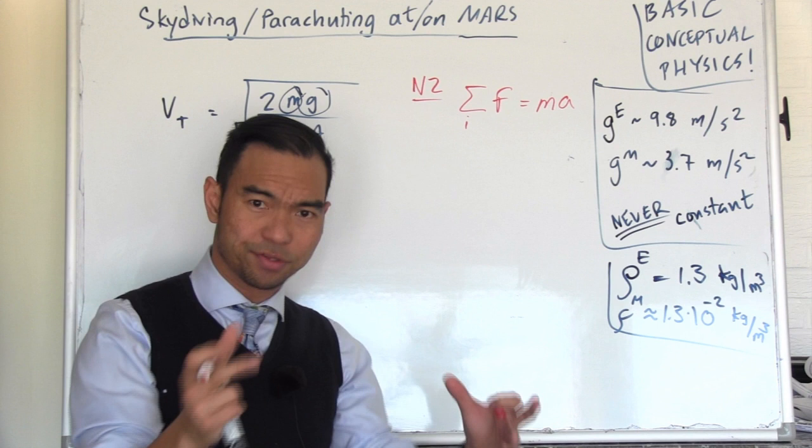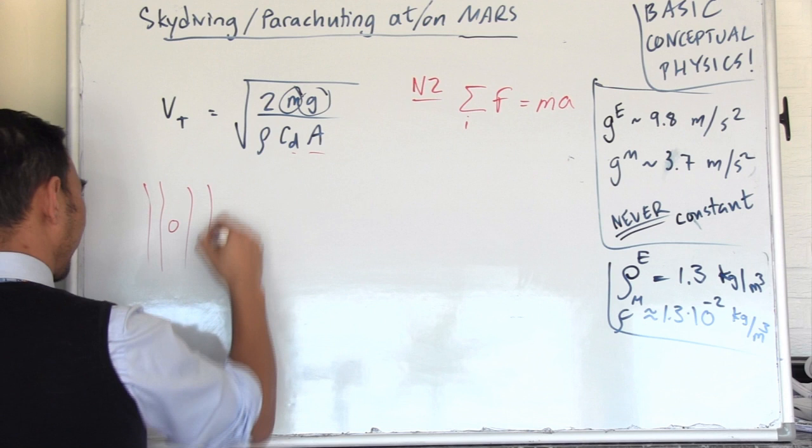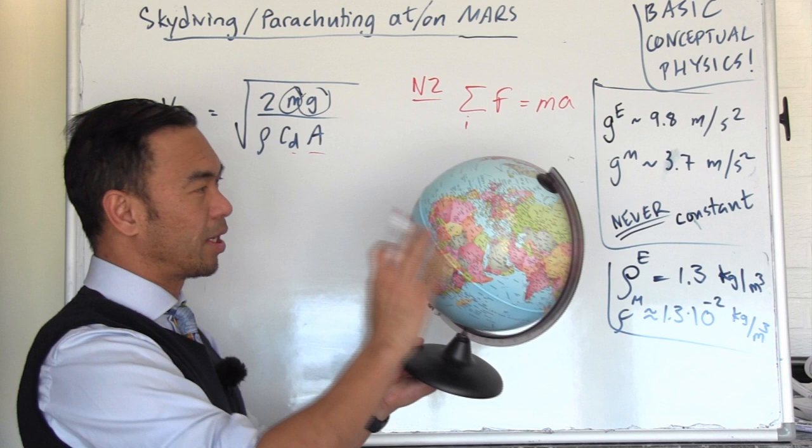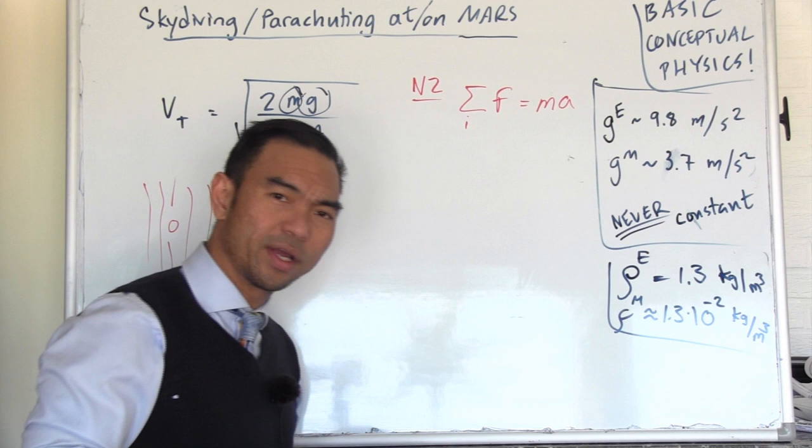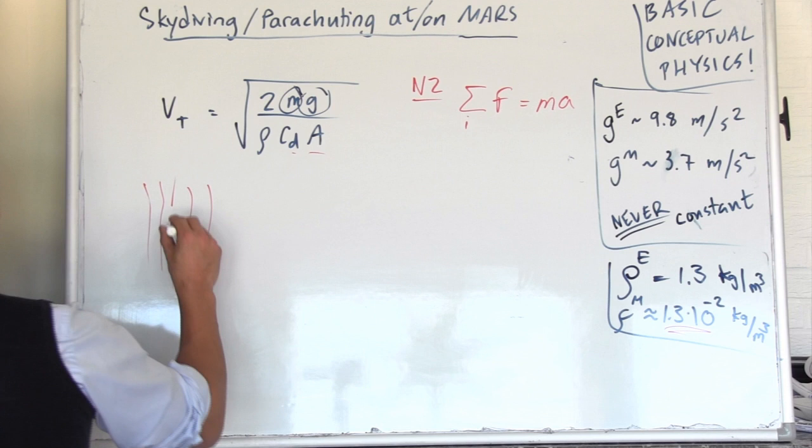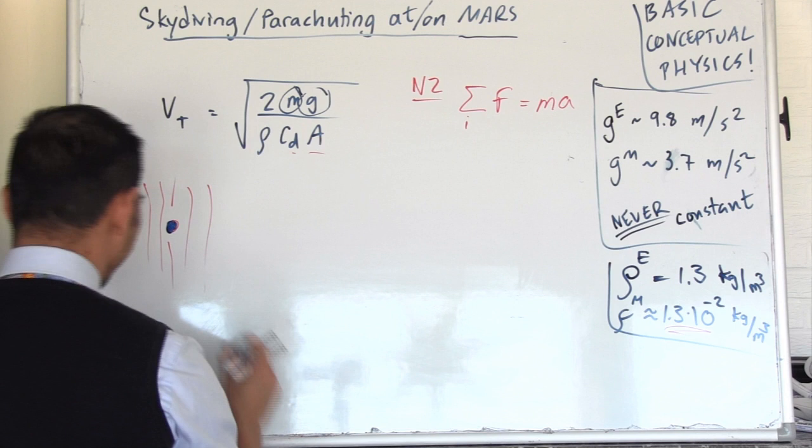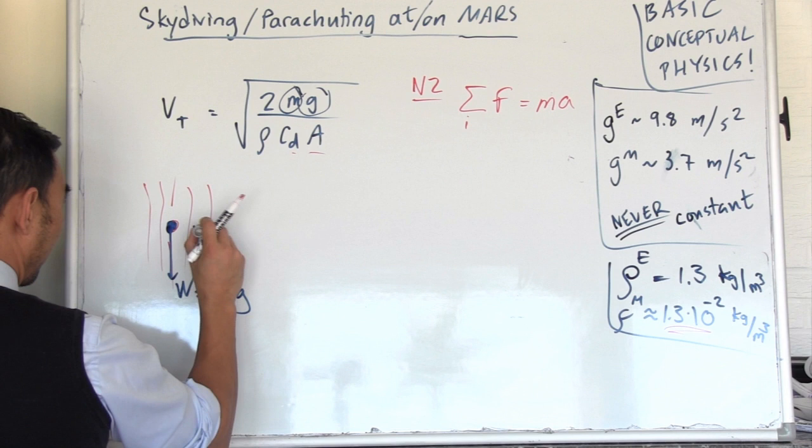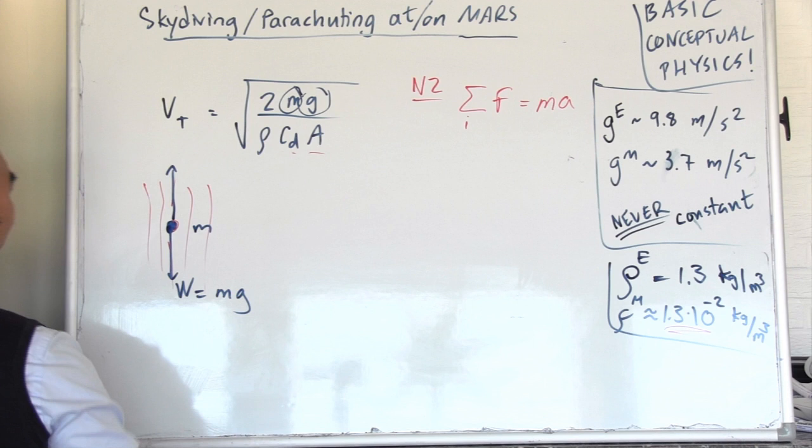Newton's second law: Sigma F equals ma. The sum of all forces equals the mass times acceleration of the system. Falling through air, and that would also mean on Mars, imagine this were Mars, the atmosphere of Mars is defined up to 50 kilometers.